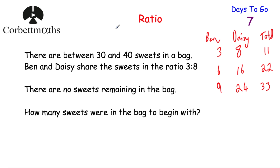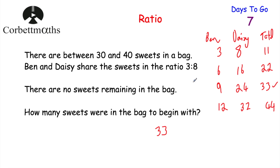That works because there are between 30 and 40 sweets in the bag. So there must have been 33 sweets to begin with. The next multiple would give 44, which is outside the range. Another way to approach this: 3 plus 8 equals 11, so every time we share sweets we share 11 at a time — we just look for a multiple of 11 between 30 and 40, which is 33.